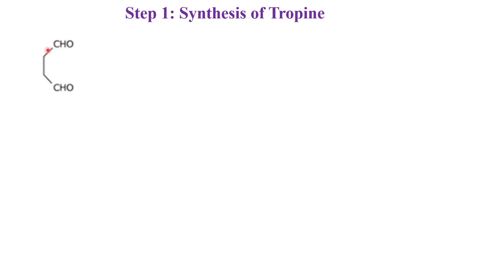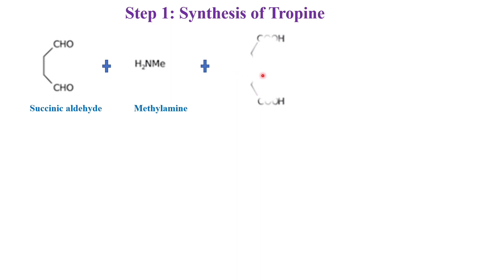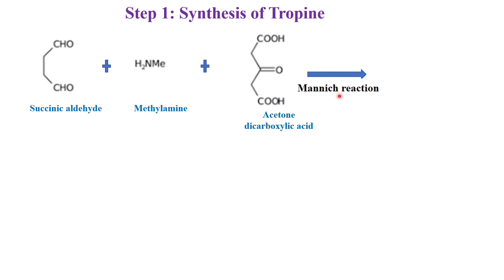For this synthesis we have taken the starting material as succinic anhydride. Succinic acid is CH2CO-CH2CO. But the acids are replaced by aldehyde, that is called succinic aldehyde. With succinic aldehyde we have added methylamine and also acetone dicarboxylic acid. Acetone is CH3CO-CH3; in both ends one H is replaced by acid, that is called acetone dicarboxylic acid. These three undergo the Mannich reaction.